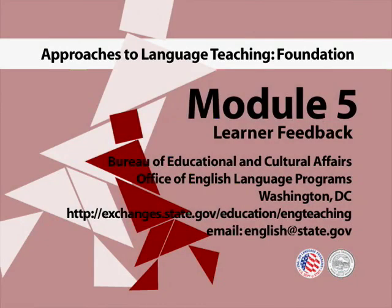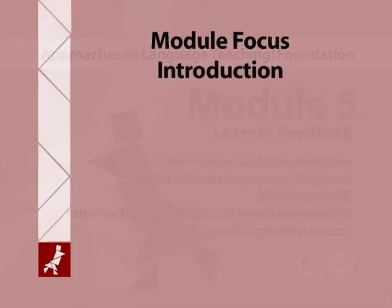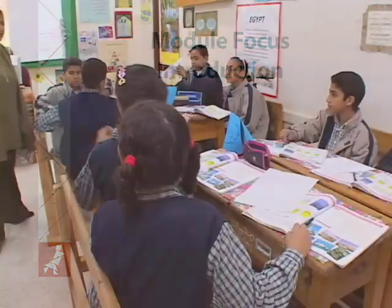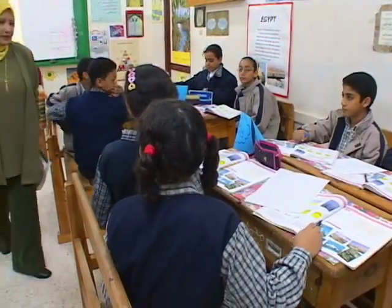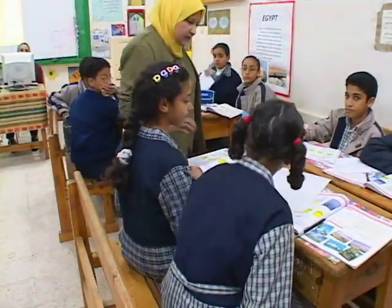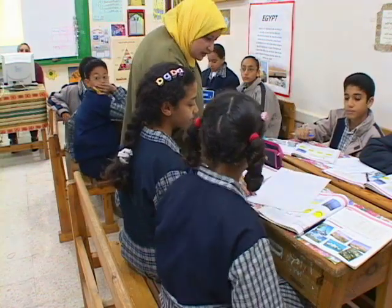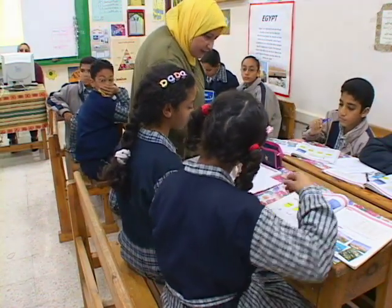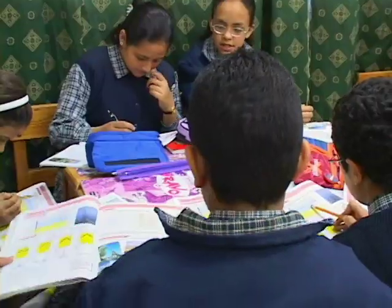Module 5: Learner Feedback. One important distinction to make when giving learner feedback is that of formative versus summative evaluation.